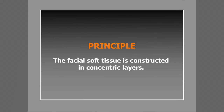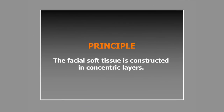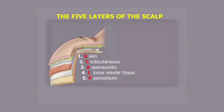Now let's turn our attention to the arrangement of the soft tissues of the face. The soft tissue of the face is constructed in concentric layers, which is easiest to see in the scalp where the anatomy is less complex. The five layers are shown here, as known by all medical students. Of course, plastic surgeons discovered a sixth layer of dissection under the periosteum.